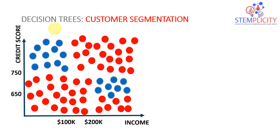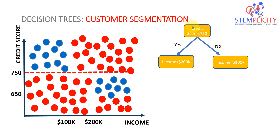Credit score ranges up to around 800 max. A score of 650 is okay, 750 is great — banks will compete to lend you money at a very low interest rate. For income, around 100k to 200k is a good number. Banks try to do customer segmentation by asking questions. The first question is: is your credit score less than 750 — yes or no?